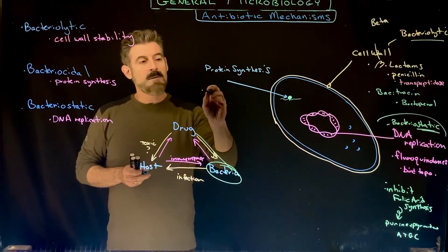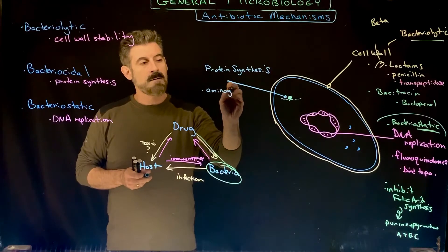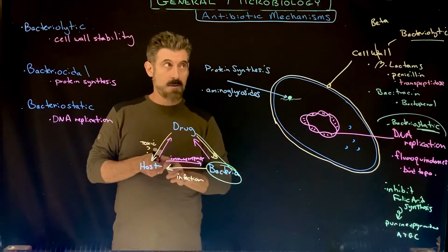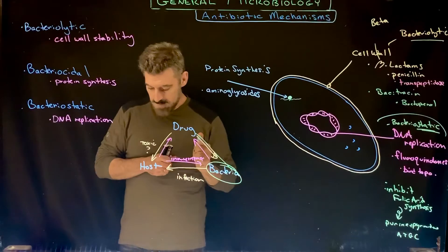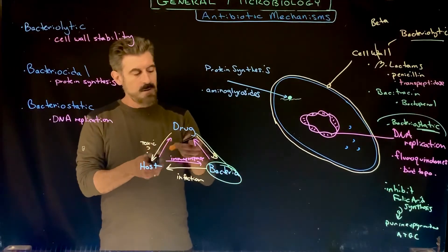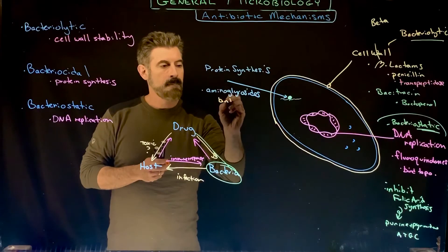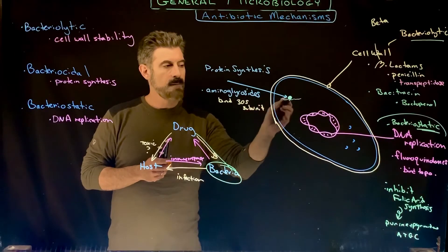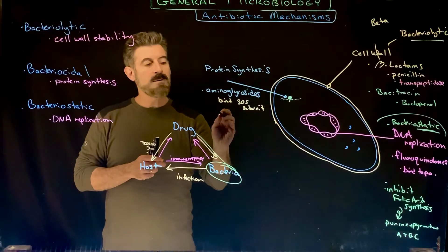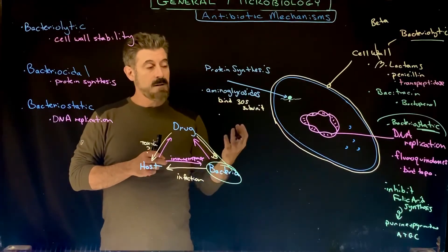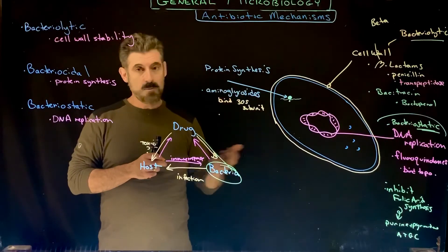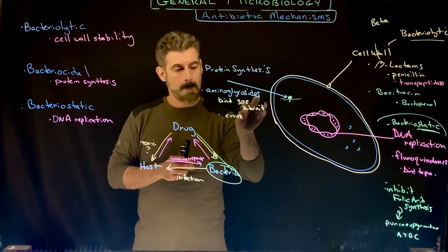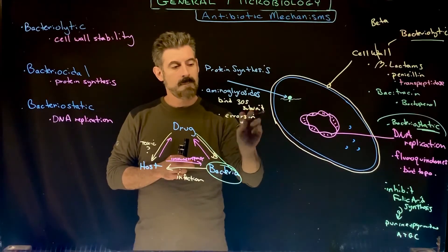We have aminoglycosides as one group or category of antibiotics. What the aminoglycosides are going to do is they bind to the small subunit, the 30S subunit of the ribosome. What they do is they mess up the proofreading of the new polypeptide and they cause errors, so there'll be typically errors in the new protein.